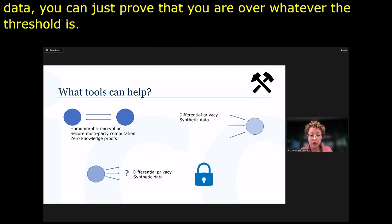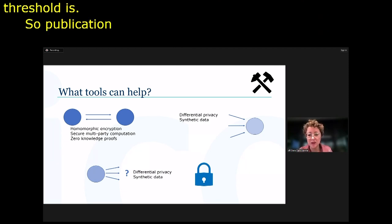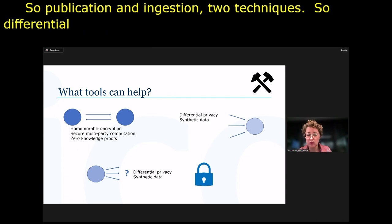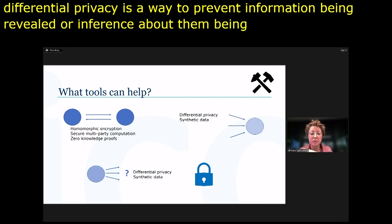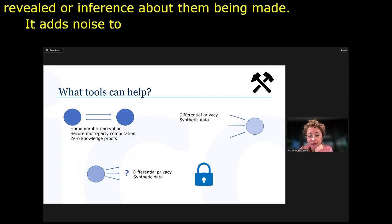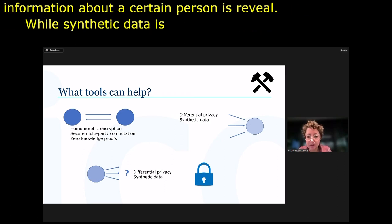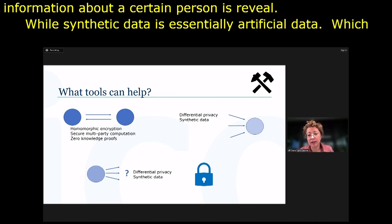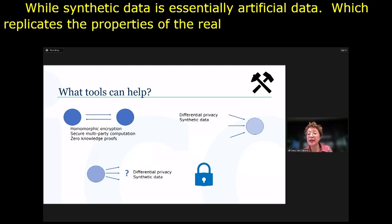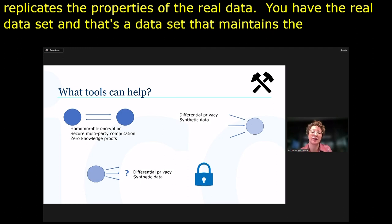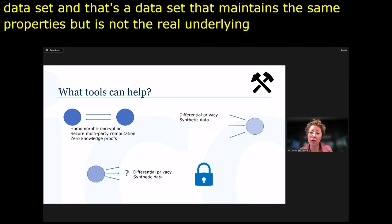For publication and ingestion, two techniques are applicable. Differential privacy is a way to prevent information about specific individuals being revealed or inferences being made — it adds noise to records and measures how much information about a person is revealed. Synthetic data is essentially artificial data that replicates the patterns and statistical properties of real data, so you generate a synthetic dataset that maintains the same properties but is not the real underlying data, either anonymising or significantly de-identifying it.